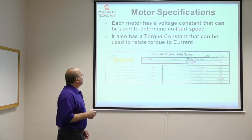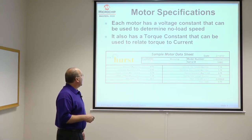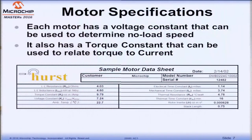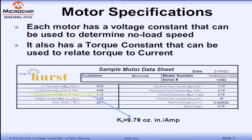Motors, whether brushed or brushless, come with different specifications. Some constants help you determine the no-load speed and the current requirement for a certain torque. The torque constant K_T is specified in torque per amp. The voltage constant is specified in peak voltage per RPM or 1,000 RPM. Knowing your voltage, you can calculate the no-load speed. Knowing your torque requirement, you can calculate the current, or vice versa.